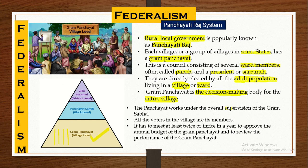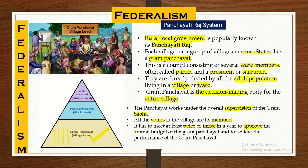The Panchayat works under the supervision of the Gram Sabha. Sabha means gathering — all the voters, that is all the adult population living in the village, are members of the Gram Sabha. It has to meet at least twice, or if possible thrice, in a year to approve the annual budget of the Gram Panchayat, and also to review the performance of the Gram Panchayat.